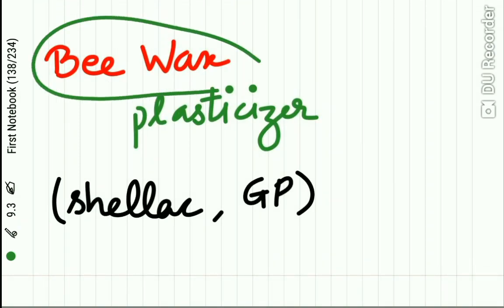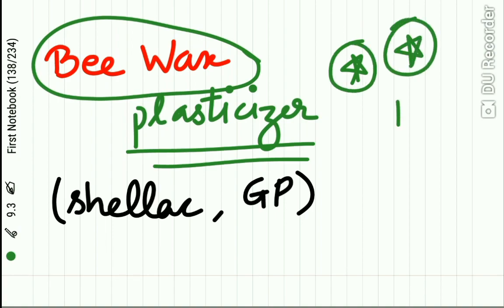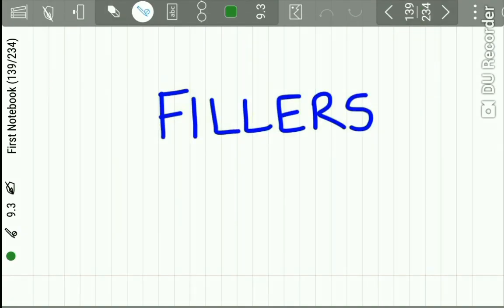Bee wax is also added as a plasticizer in impression compound. This is a very important question asked frequently in viva: the plasticizer principally used in impression compound is bee wax. Sometimes shellac and gutta-percha may also be used.